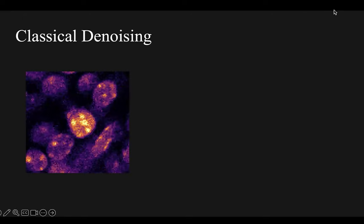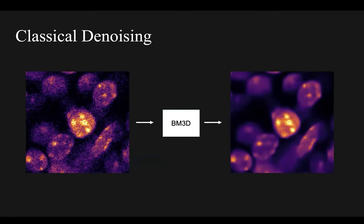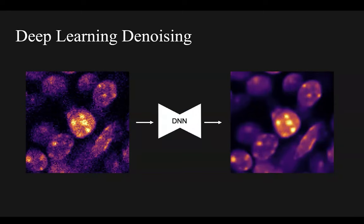Before the advent of deep learning, most classical denoisers such as BM3D had no understanding of the structures they were trying to recover, leading to strange artefacts or blurring in denoised images. Today, deep neural networks (DNNs) can be trained to understand the structures they're trying to recover, and can produce denoised images with no artefacts and with sharp, clear details.